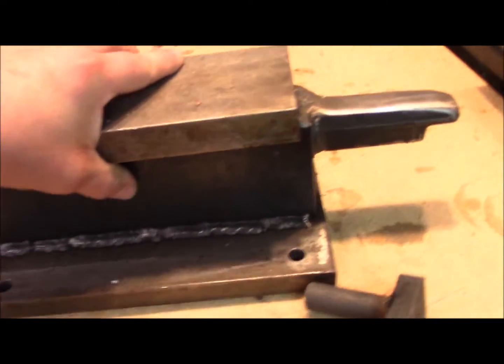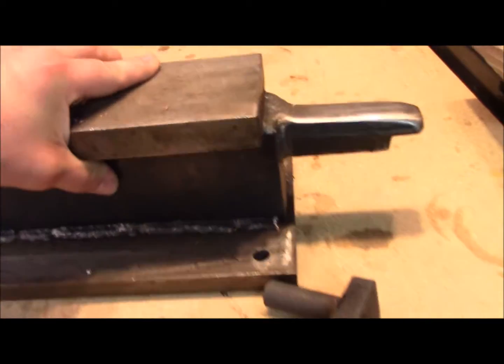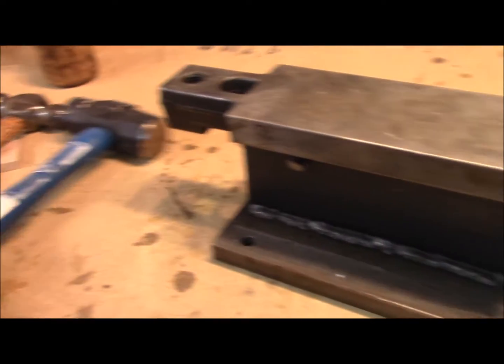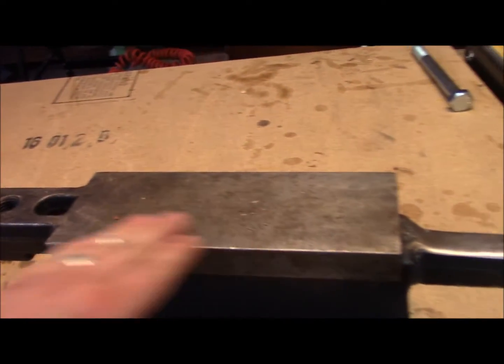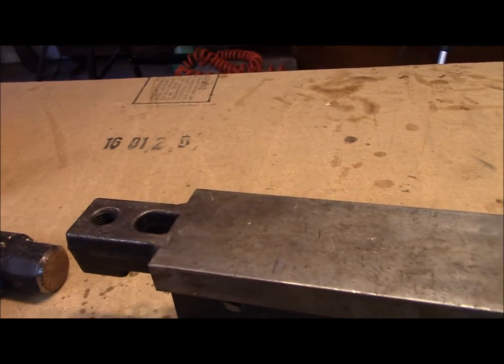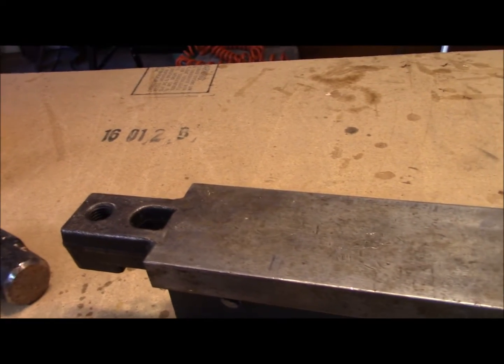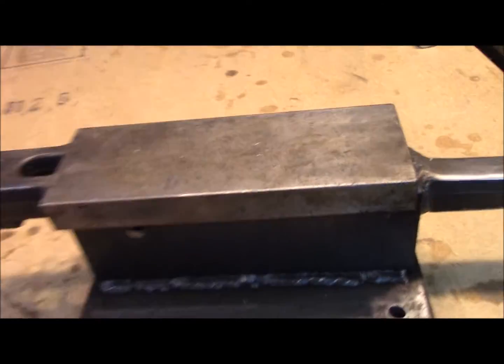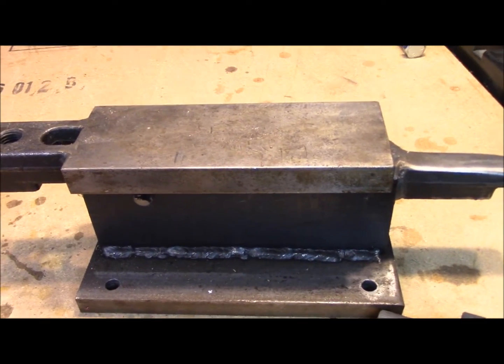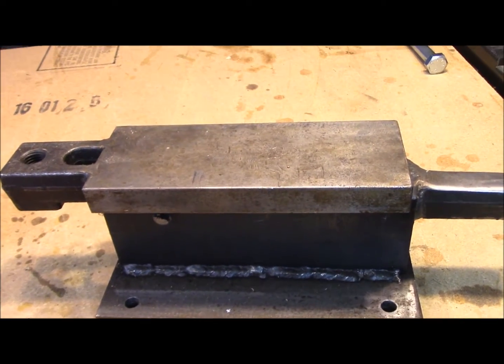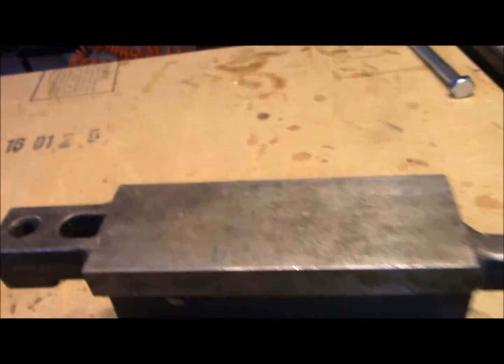I was getting a little bit into some blacksmithing so I wanted to get an anvil, so I decided to just make one. The top here is forged hardened. I got it non-magnetic red hot and quenched it in burnt motor oil, just some old motor oil I had, to harden the top.